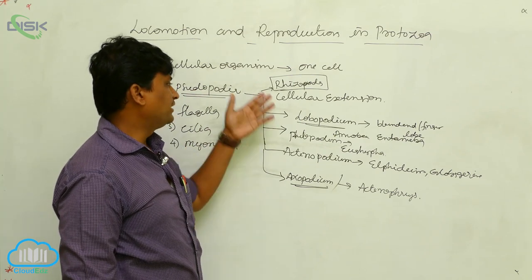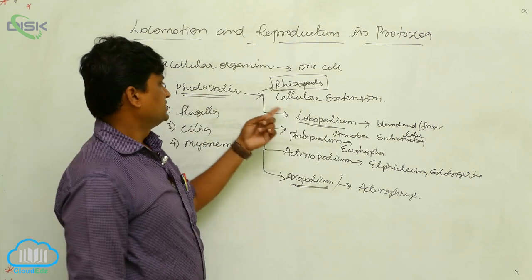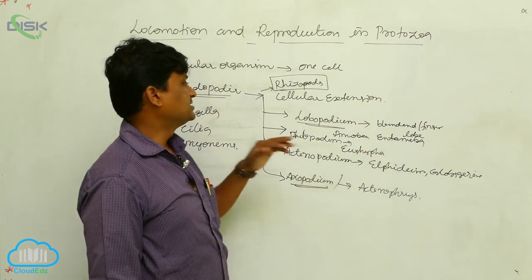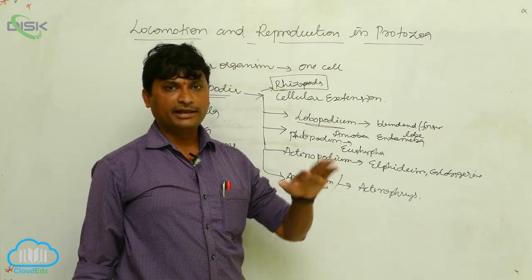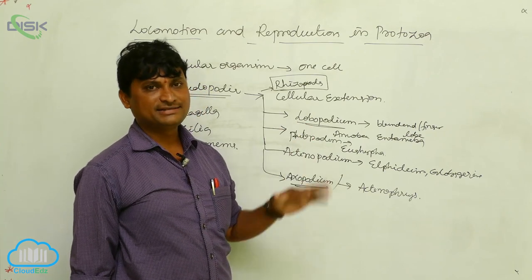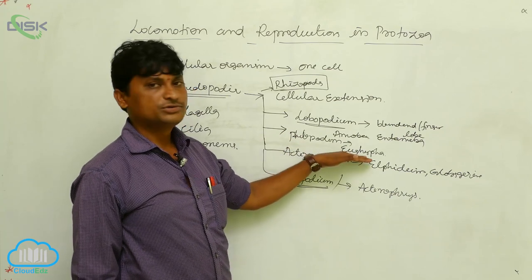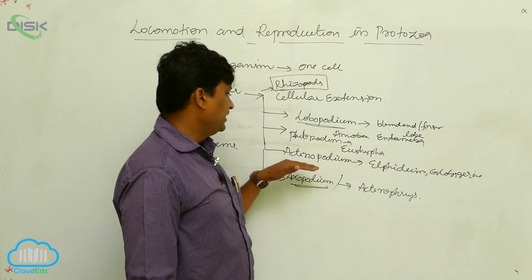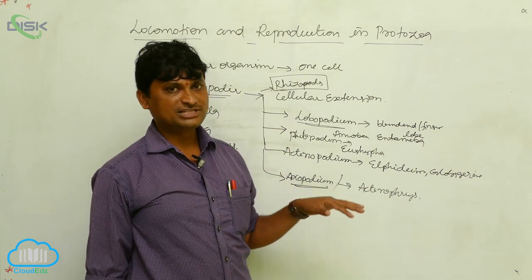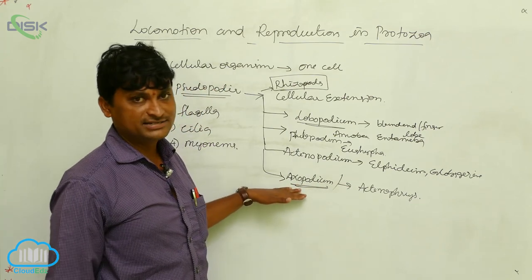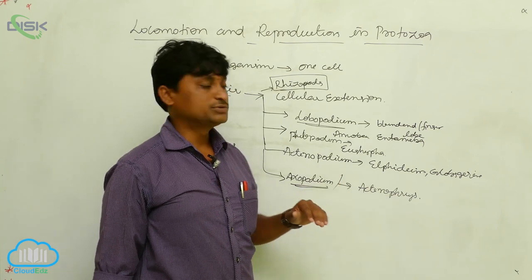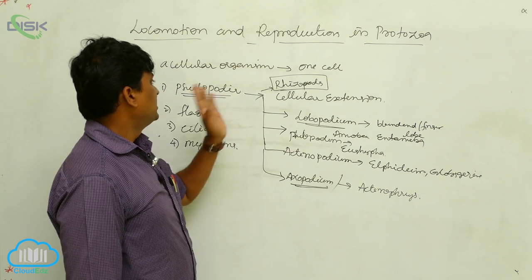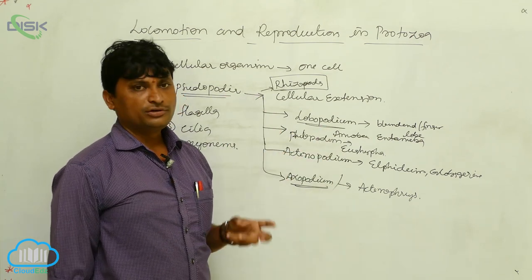In rhizopoda protozoans, four types of pseudopodia are seen: lobopodial type with blunt or finger-like lobe structures (e.g., Amoeba and Entamoeba); filopodia, which are filamentous pseudopodia (e.g., Euglypha); actinopodia, which are spine-like cytoplasmic extensions (e.g., Elphidium and Globigerina); and axopodia or heliopodia (e.g., Actinophrys). Pseudopodia are formed for capturing food materials.